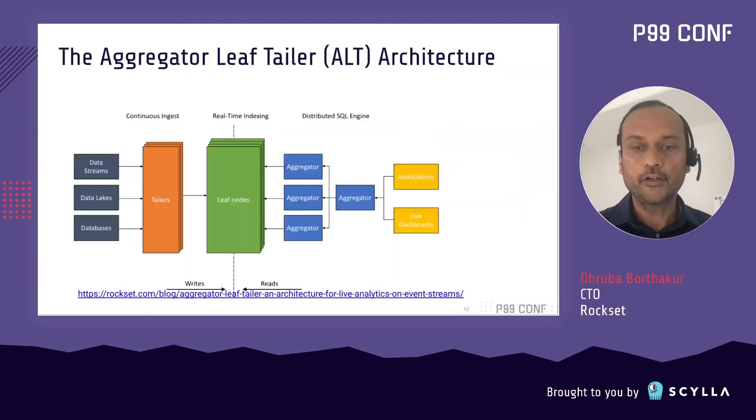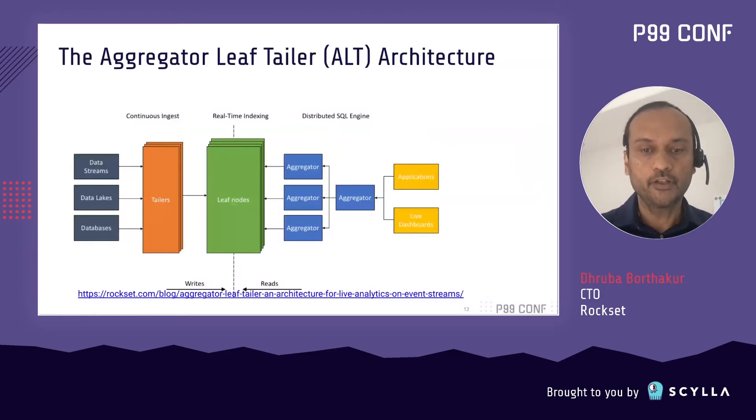Let's double click on how Rockset implements this — I'm going to tell you about the aggregator-leaf-tailor architecture. That's the architecture that Rockset uses for real-time analytics. For example, data might be in data streams, data lakes, or databases, and then there is a tailor. Actually, let me show you the entire picture first, then I can tell you more about each of these items.